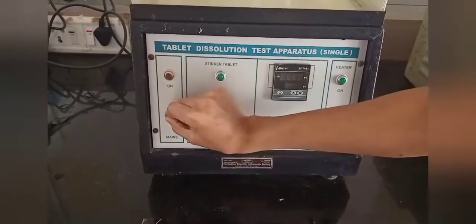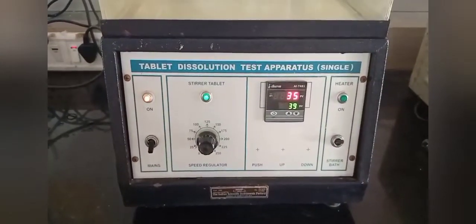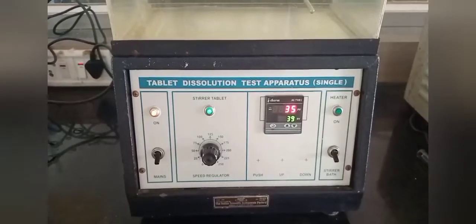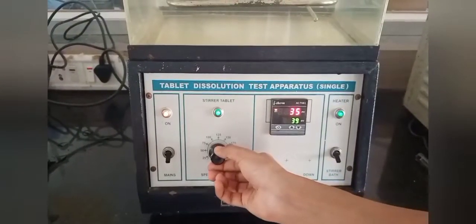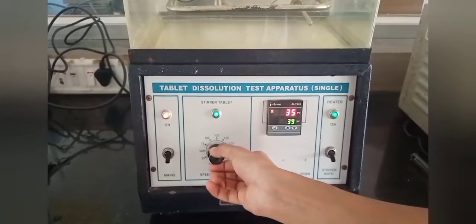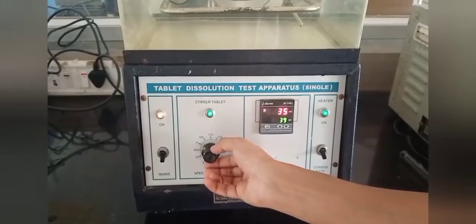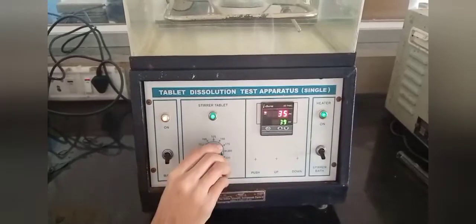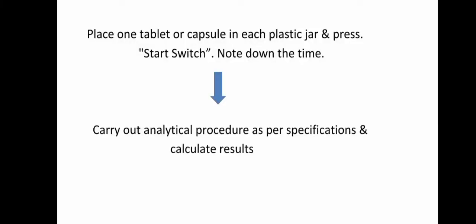Here we can switch on the machine and regulate the RPM. Next, place one tablet or capsule in each plastic jar and press the switch, and note down the time. Carry out the analytical procedure as per specifications and calculate results. Here we can see that clearly our tablet is dissolving.